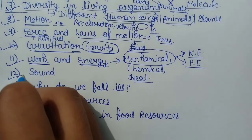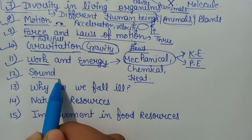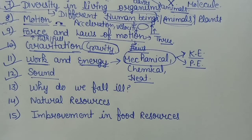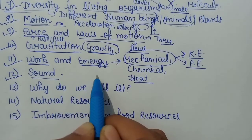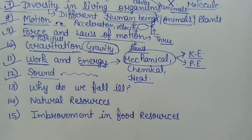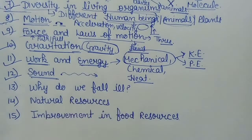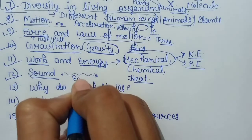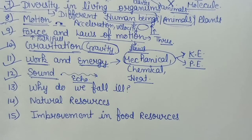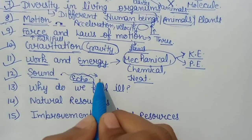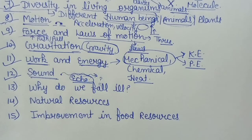फिर इसके बाद हम जाएंगे chapter number 12 पर — that is Sound. Sound मतलब क्या है, कैसे produce होती है, और एक position से दूसरी position तक कैसे travel करती है। हम देखेंगे कि sound एक तरीके से wave है जो travel करती है — उसको किसी medium की ज़रूरत पड़ती है। फिर हम देखेंगे echo क्या होती है — जब hills में चिल्लाते हैं तो आवाज़ वापस आती है जिसे हम गूंज कहते हैं। Echo कैसे produce होती है और किन conditions में generate होगी — यह सब हम पढ़ेंगे in chapter number 12.